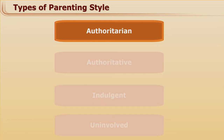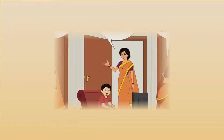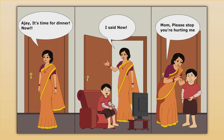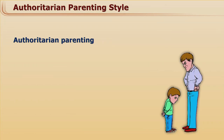So now let's talk about the first parenting style, that is authoritarian. Look at this picture — what do you see here? The mother is calling the child for dinner. The child said he is coming, but the mother wants the child right now, and what does the mother do? She is pulling the hair of the child. So can you make a guess what this parenting style is? The name itself suggests authoritarian parenting style.